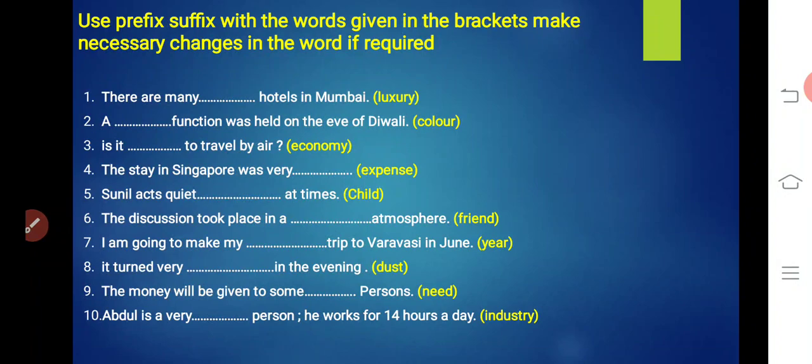There are many luxurious hotels in Mumbai. Next is: A dash function was held on the eve of Diwali. There was a function on Diwali evening. What kind of function was it? What will color become? An adjective will be formed. Colorful. A colorful function was held on the eve of Diwali. Very good. Third sentence: Is it dash to travel by air? Is air travel... what will economy become? Economy means economically, is air travel economical? So MY changes to MIC - economic.